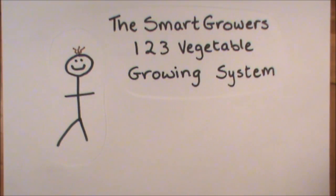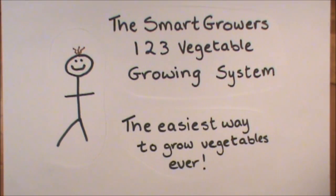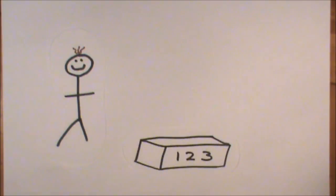Fred discovered the Smart Grower's 1-2-3 Vegetable Growing System. It's the easiest way to grow vegetables ever. It had everything Fred needed in one box.